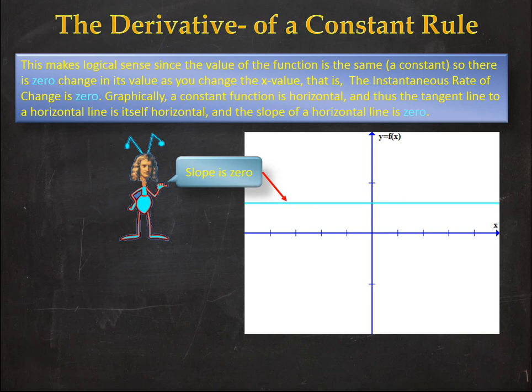And we know that the slope of any horizontal line is zero. And we also know that if the slope of that line is zero, the slope of any tangent to that line is also equal to zero.